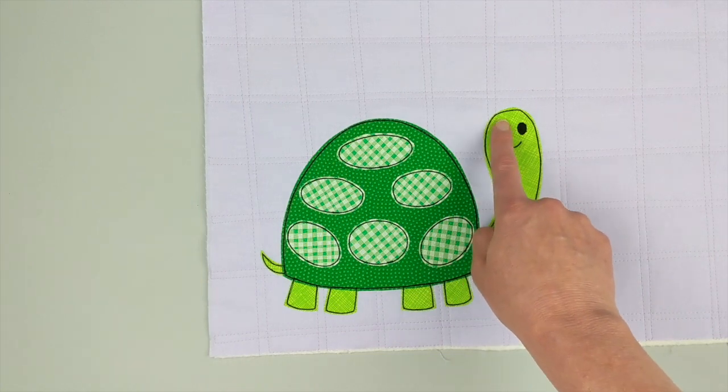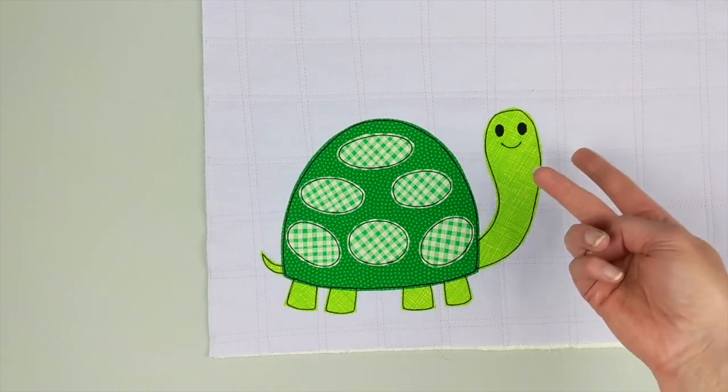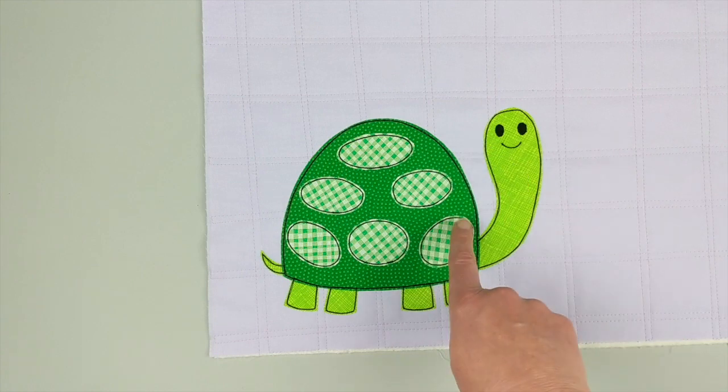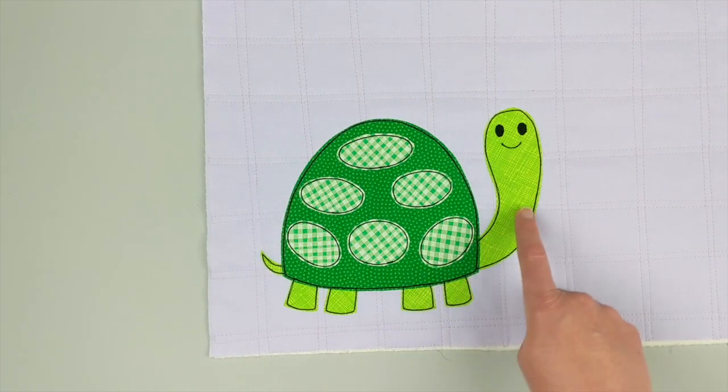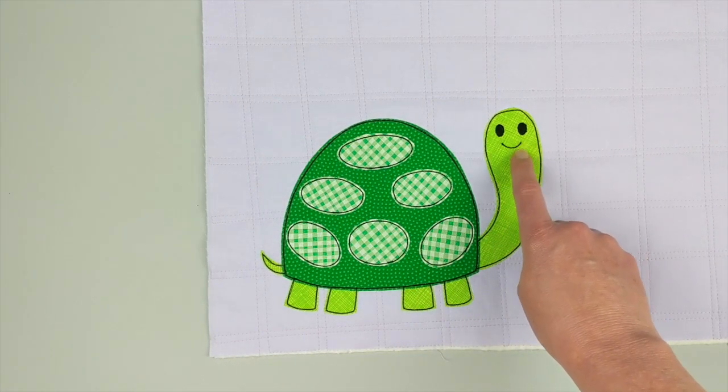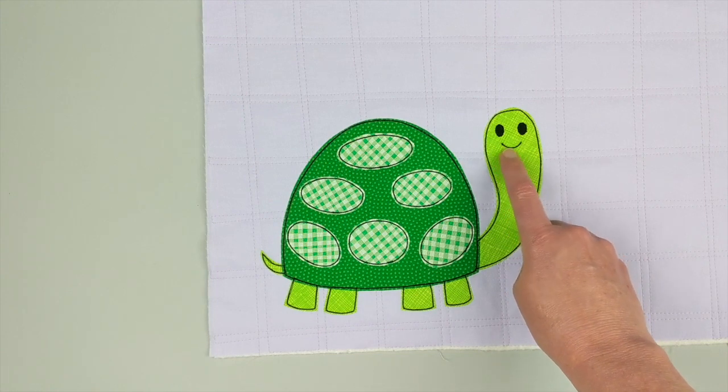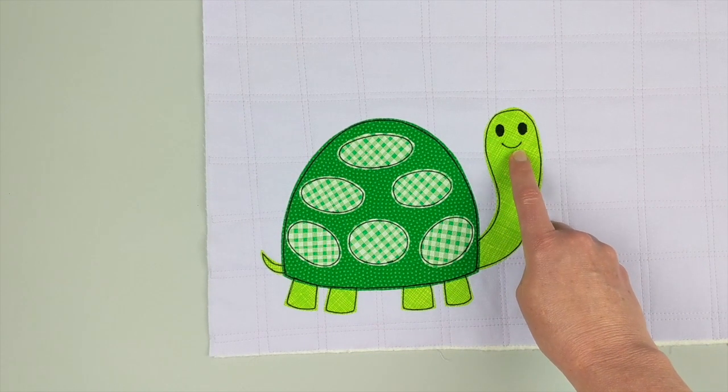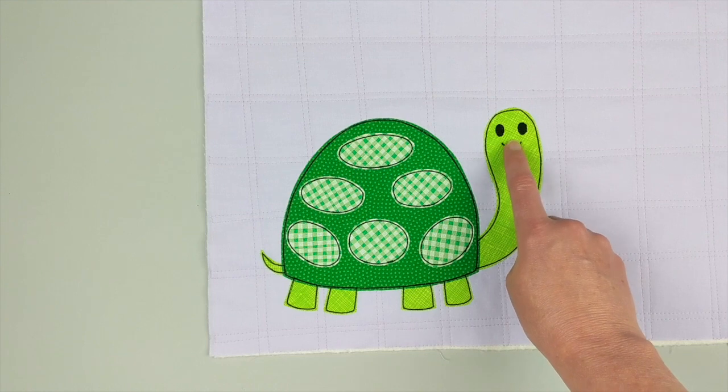I went around each of those three times. I only go around the eyes once because it's black, so you can't see the sketchy, scribbly look that I do. I did go over the mouth three times to get a nice thick line, and on the mouth I'm really trying to go right on my line of stitches. I don't make that very scribbly.